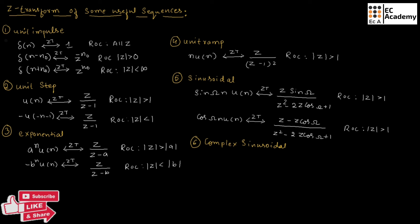Now let us understand the complex sinusoidal function. It can be represented as alpha to the power of n times sin(ω₀n) U of n. If we perform Z-transform on this we will get Z times alpha sin omega naught, whole divided by Z squared minus 2 alpha cos omega naught times Z plus alpha squared.